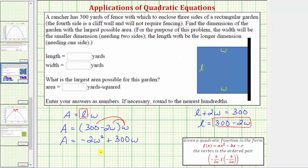So notice for our equation, a is equal to negative 2, b is equal to positive 300, and we don't need c to find the vertex, but c is equal to zero because there's no constant term. Let's go to the next slide and find the coordinates of the vertex.